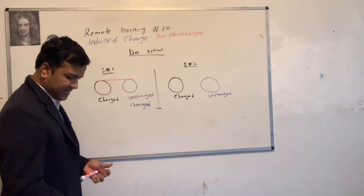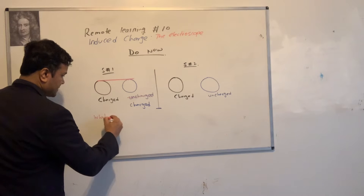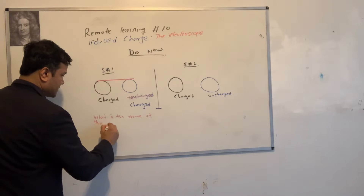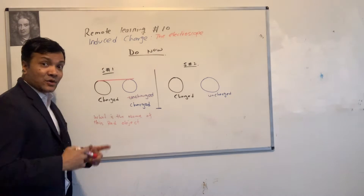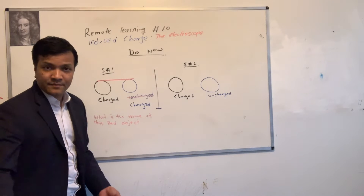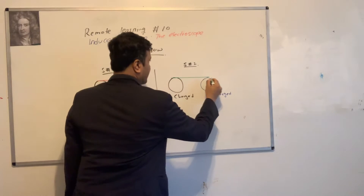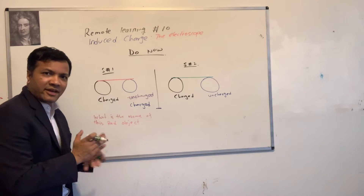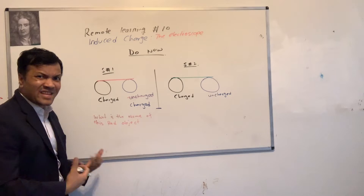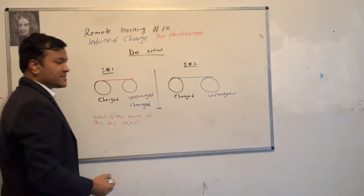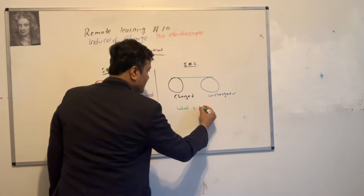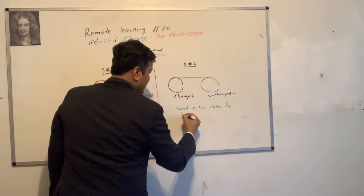So what is the name of this red object? Now I will do the same thing — I'm going to connect these two by another object, which I won't give you the name. I'm going to use the green. I'm going to connect both by green. What would be the consequences? What would be the result of connecting them by green? Nothing — it still remains uncharged, so there is no consequence. What is the name of this green object?